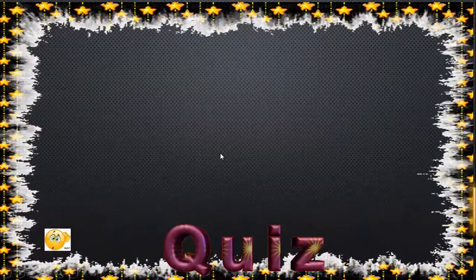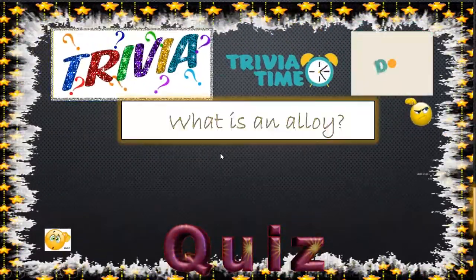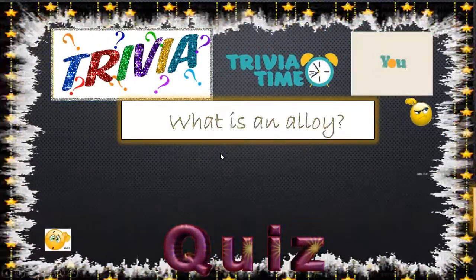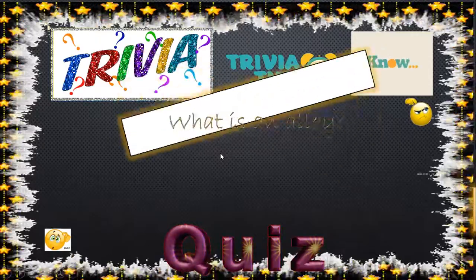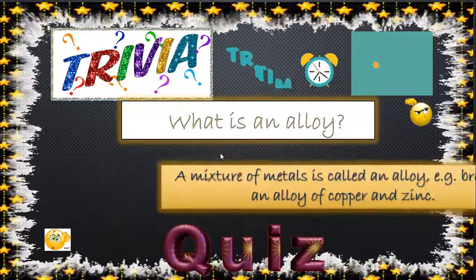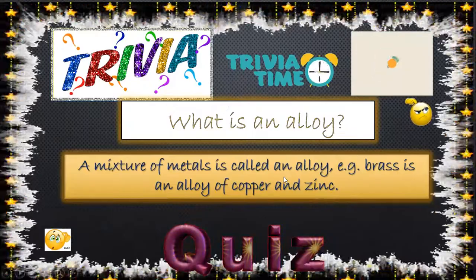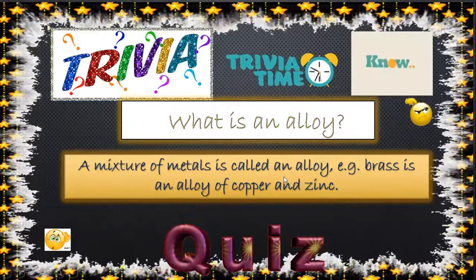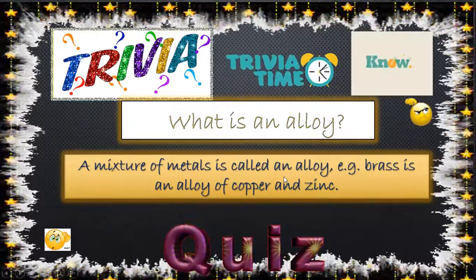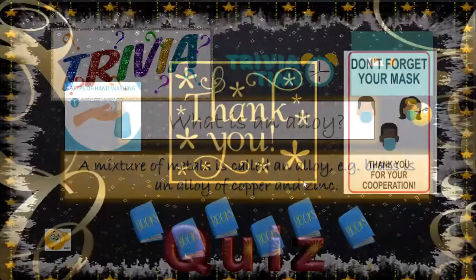It's trivia time, students! What is an alloy? A mixture of metals is called an alloy. For example, brass is an alloy of copper and zinc.